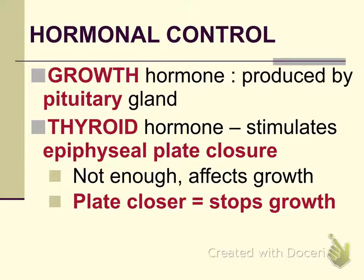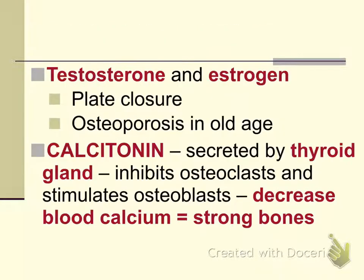Some hormones affect bone growth and height. Growth hormone is produced by the pituitary gland, which is located in the skull. Thyroid hormone is made by the thyroid gland, located around the neck region, and it stimulates epiphyseal plate closure — meaning if the plate closes, growth stops. If you don't have enough thyroid hormone, you will continue to grow. Testosterone and estrogen can also stimulate closure of the epiphyseal plate. Osteoporosis is related to low levels of estrogen: low estrogen causes not enough calcium to be stored in the bones, leading to weakening or brittle bones due to old age.